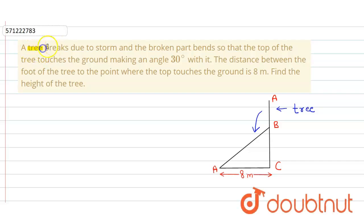In the given question, a tree breaks due to storm and the broken part bends so that the top of the tree touches the ground, making an angle of 30 degrees. As we can show you in the figure, we have assumed that AC is a tree. Due to the storm it breaks, and then its A part touches the ground and makes an angle of 30 degrees.